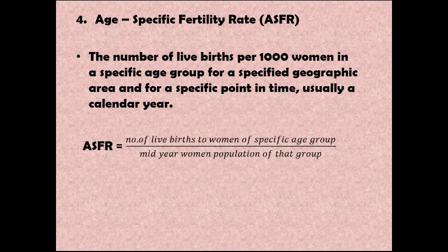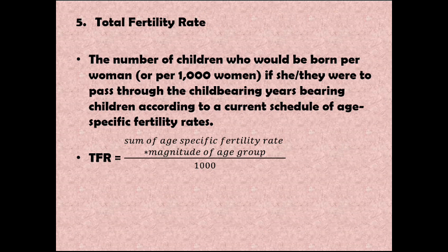Next we have the Age-Specific Fertility Rate, or ASFR. This is the number of live births per thousand women in a specific age group, for a specific geographic area and a specific point in time, usually a calendar year. Any age group within 15 to 49 years can be used — for example, 15 to 20, 20 to 30, or 30 to 35. The formula is: ASFR = number of live births to women of a specific age group ÷ mid-year women population of that group.